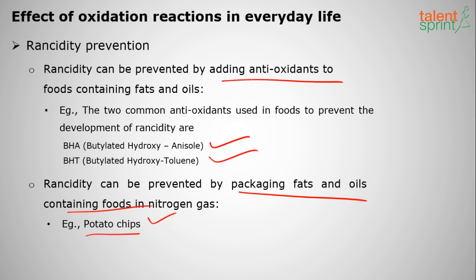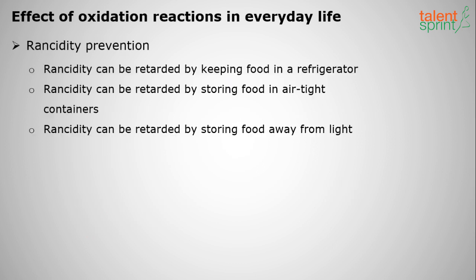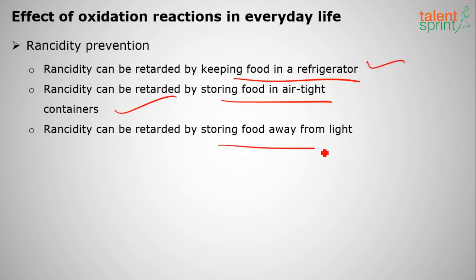Rancidity can also be prevented by keeping food in refrigerators, storing food in airtight containers, and storing food away from light. So the two main effects of oxidation are corrosion of metals and rancidity, which is the spoiling of food. Hope you have learned enough about chemical reactions and equations. We shall meet in the next session — thank you so much.